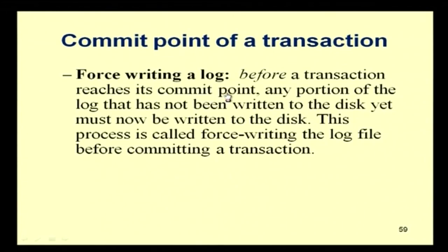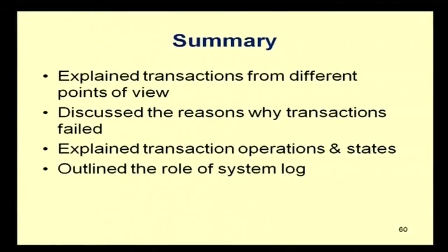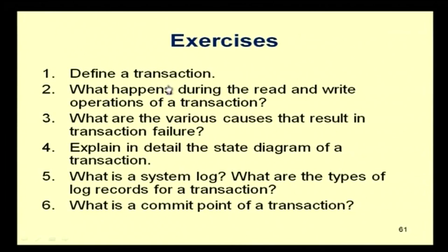Before a transaction reaches its commit point, any portion of the log not yet written to disk must be written — this process is called force writing. In summary, we have looked at what transactions are from different viewpoints, discussed the properties of transactions, the reasons why transactions can fail, transaction operations and states, and the entries in the system log needed for rollback. Theory questions include: define a transaction, explain read and write operations, discuss causes of failure, explain the transaction state diagram, describe system log entries, and define the commit point.